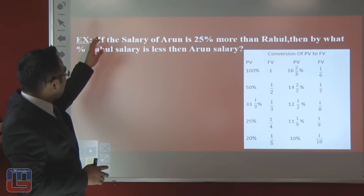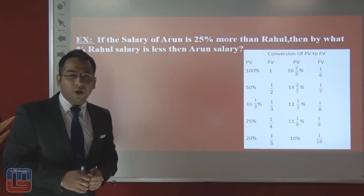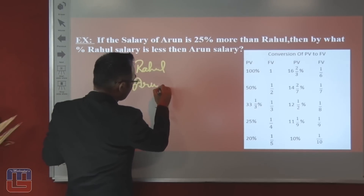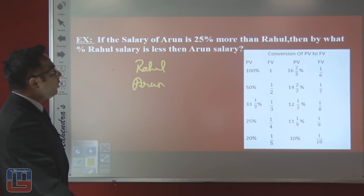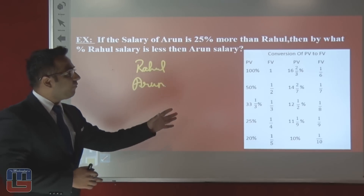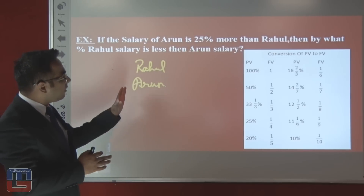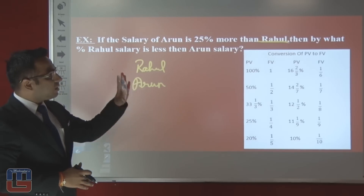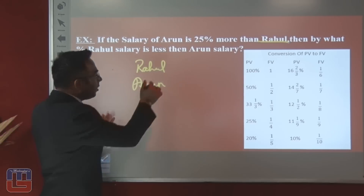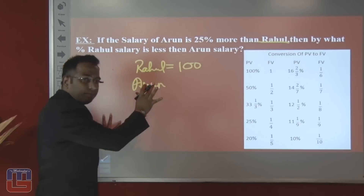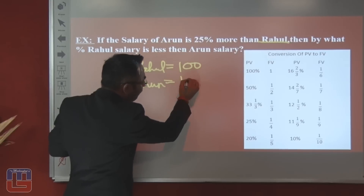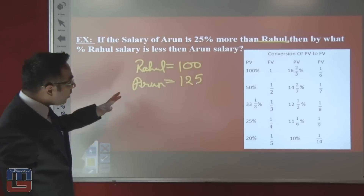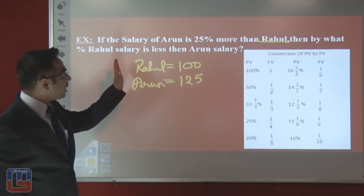Here is an example: if the salary of Arun is 25% more than Rahul, there are two people — Rahul and Arun. The base here is Rahul, so we take Rahul's salary as 100. Since Arun earns 25% more than Rahul, Arun earns 125. If Rahul is earning 100, Arun will earn 125.